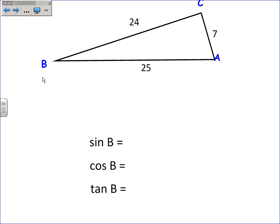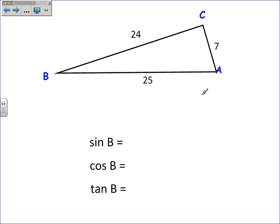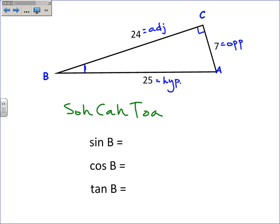Another example — this one is turned a little differently. We're looking at angle B, and this is my right angle. The 24 would be the adjacent side, the 7 would be the opposite side, and 25 would be the hypotenuse. So the sine is 7 over 25, the cosine is 24 over 25, and the tangent is 7 over 24.